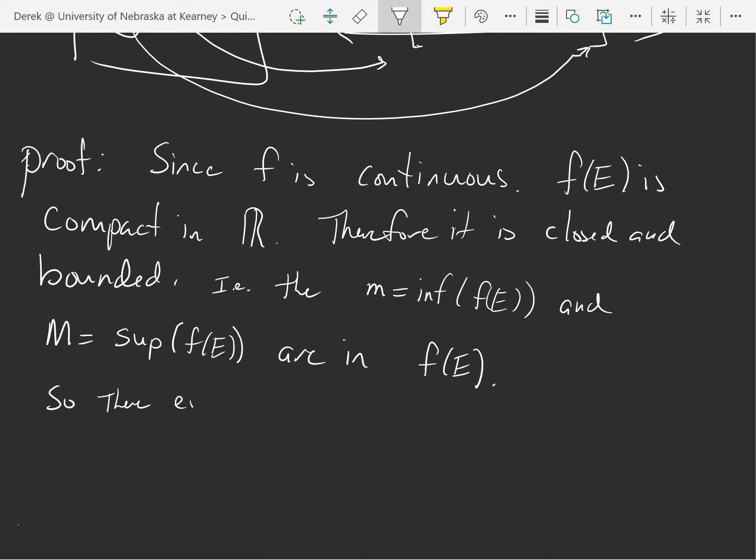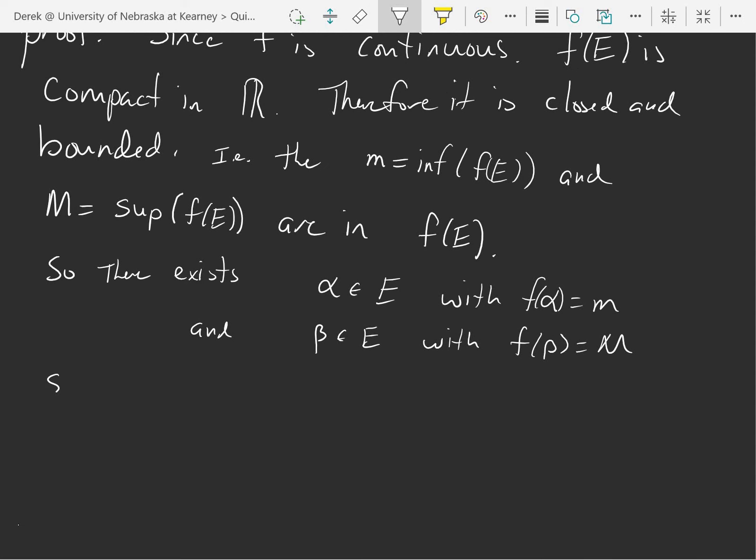So there exists alpha in e with f of alpha equal to little m and beta in e with f of beta equal to capital M. So for any x in e, f of alpha is less than or equal to f of x is less than or equal to f of beta. Because this is the supremum and this is the infimum, everything else has to lie between them.